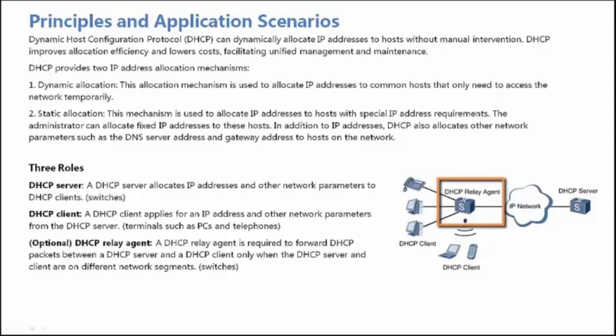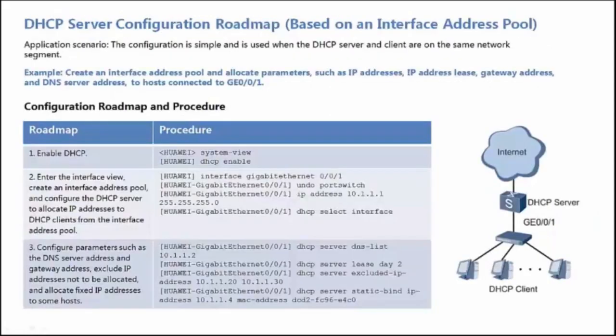The DHCP Relay Agent role is optional. A DHCP Relay Agent is deployed to forward DHCP packets only when the DHCP Server and the DHCP Clients are on different network segments. Now let's see how to configure a DHCP Server.